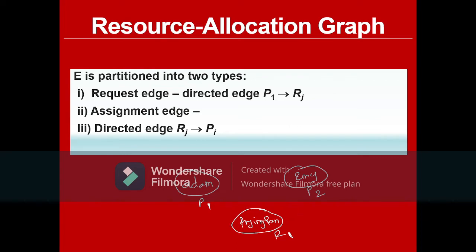A request edge means the process is requesting the resource — process P1 is requesting resource R1. An assignment edge is a directed edge from Rj to Pi. The head of the edge points to the process and the tail points to the resource, meaning P2 is currently holding resource R1.